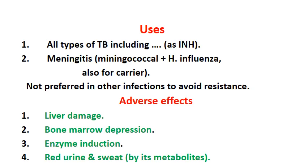An important adverse effect of rifampicin is that its metabolites are red in color, so almost all patient secretions — urine, sweat, and other secretions — become red. This is not clinically significant in the disease process, but is troubling to the patient who may think the red urine indicates bleeding. Physicians and pharmacists must inform patients that this is due to the red metabolite and is not blood.